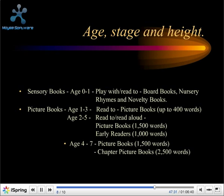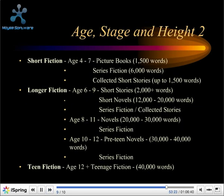These word counts are approximations — never be dominated by the word count, always try to get your story out first, then redraft. In the skipping group, picture books for the approximate four-to-seven age range are up to 1,500 words, and chapter picture books up to 2,500 words. Short fiction — termed the running stage — includes picture books up to 1,500 words, serious fiction up to 6,000 words, and collected short stories up to 1,500 words.